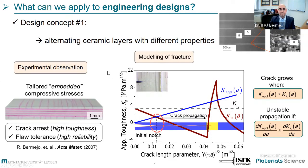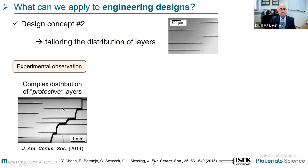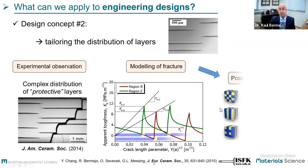To keep propagating the crack through the structure you need to increase the load, and you can reach apparent fracture toughness values which are maybe three or four times those of the individual layers. The second strategy involves embedded compressive layers — depending on how far from the tensile surface you embed this layer, you can predict one or another fracture behavior. The farther the layer is embedded, the higher the energy during crack propagation, and the toughness will vary accordingly.